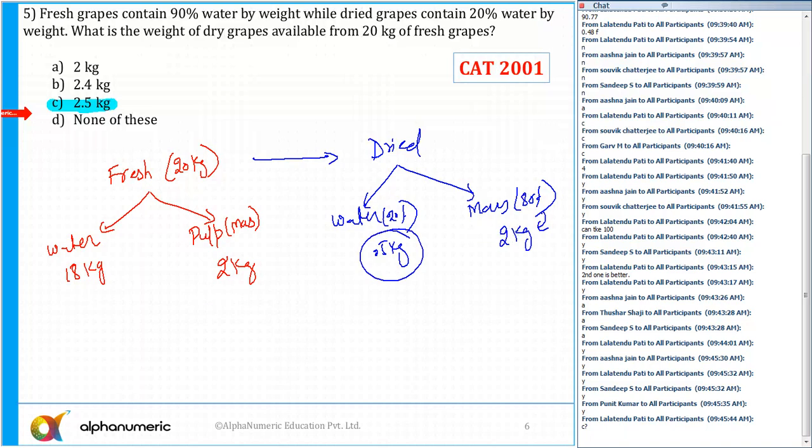80 by 4 is 20%. So 20% is 0.5 kg. So 2 kg plus 0.5 kg together will be equal to 2.5 kg. So the quantity of dry grapes is 2.5 kg.